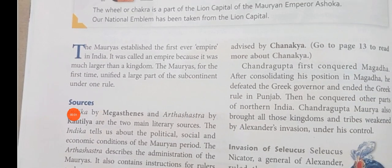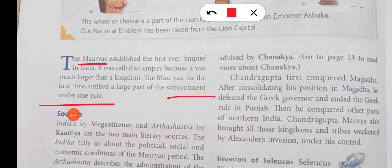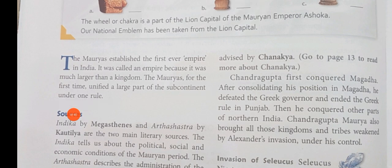The Mauryans established the first ever empire in India. It was called an empire because it was much larger than a kingdom. The Mauryans, for the first time, unified a large part of the subcontinent under one rule and took control under one ruler.